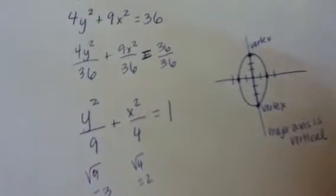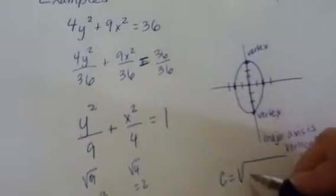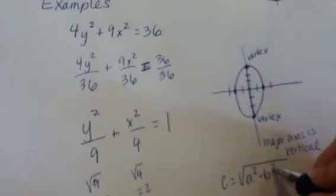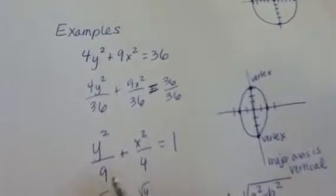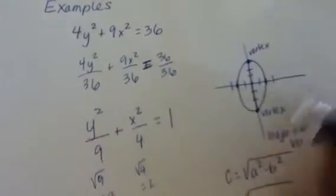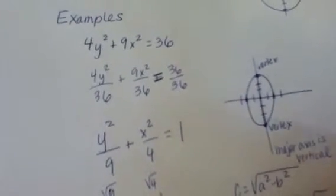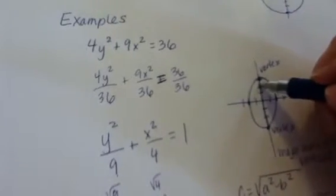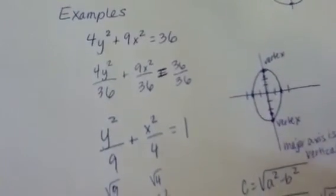The foci are always located on the major axis, so for this one the foci would be located here and here approximately. Let's practice finding the foci. From the previous video, we use c equals the square root of a squared minus b squared. In this case, a is always the longer one, so a squared is 9 and b squared is 4. We end up with the square root of 5, which is approximately a little bit past 2. There's one focus a little bit past 2, and the other focus a little bit past negative 2, based on this Pythagorean theorem relationship.